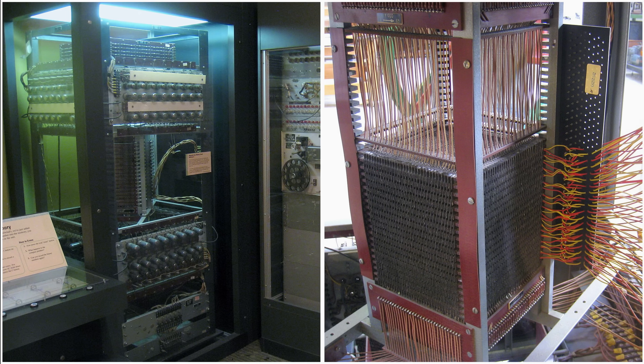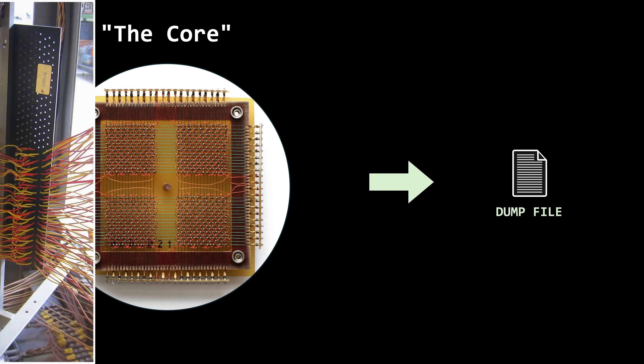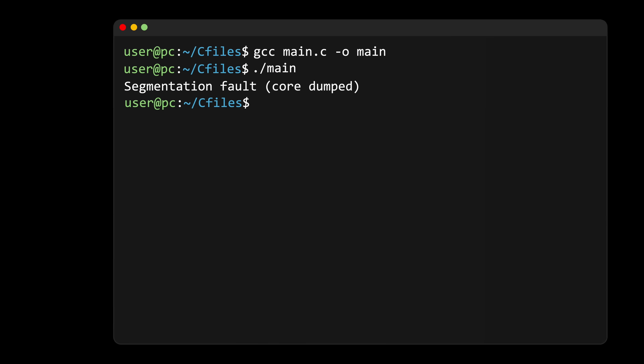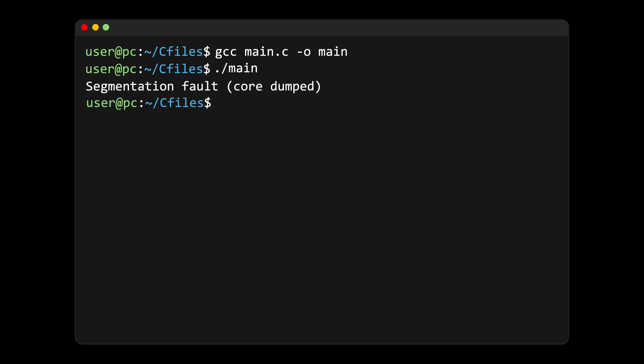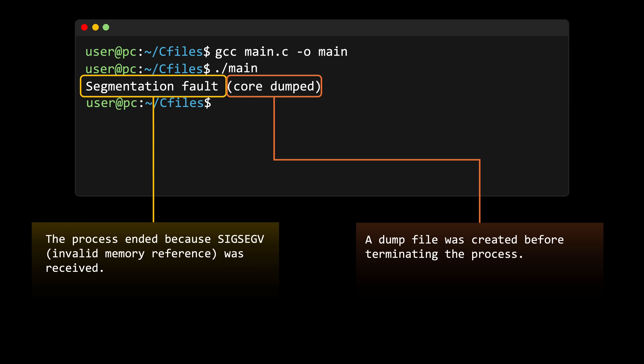And from these images, you can probably see why. So, as good programmers, they called that process of generating a dump file from the information contained by the magnetic core memory, dumping the core. And that's where the phrase core-dumped comes from. So, segmentation fault is the reason your program crashed, and core-dumped is the operating system telling you that it saved a dump file so you can use it later to figure out what went wrong — or, as we call it today, debugging.